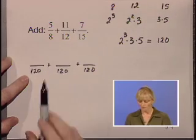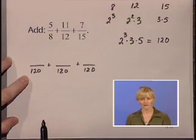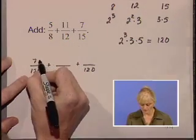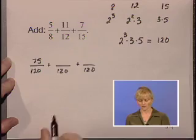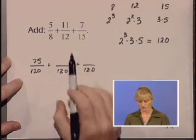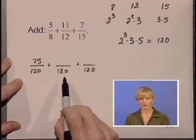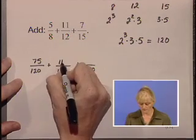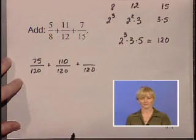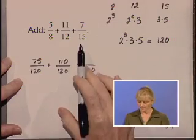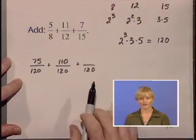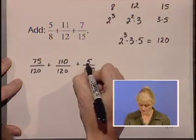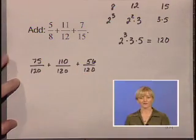8 was multiplied by 15, so we will multiply our numerator 5 times 15 and get 75. Our old denominator 12 was multiplied by 10 to get 120, so we will multiply 11 by 10 for 110. 15 was multiplied by 8 to come up with 120, so we will multiply the 7 times 8 and get 56.